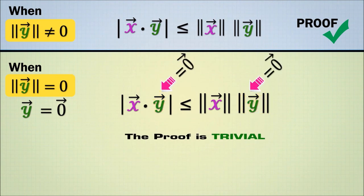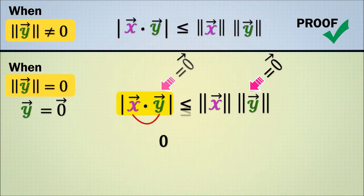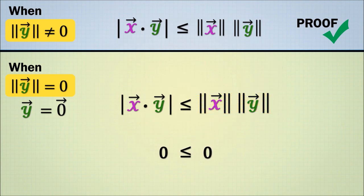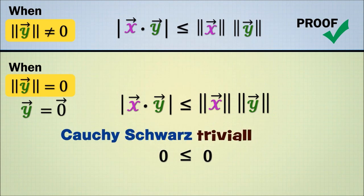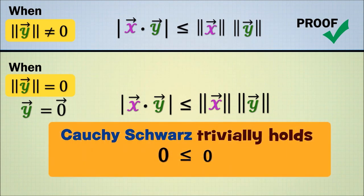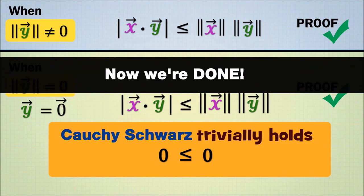Luckily though, the proof is trivial when y is zero since x dot y is zero and norm of x times norm of y is zero. Hence, Cauchy-Schwarz trivially holds as zero is less than or equal to zero. Now we're done!